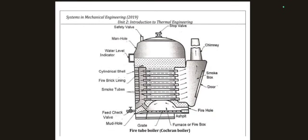In a fire tube boiler, the flue gases pass through tubes which are surrounded by water in the boiler shell. Example: Cochrane boiler. Oil from the oil tank and air supplied by a blower produce hot flue gases, which pass from the fire tube to smoke tubes. The smoke tubes are surrounded by water, heating it. Steam rises from the upper water surface; gases enter the smoke box and are exhausted through the chimney. The boiler shell is surrounded by refractory material to reduce heat losses.